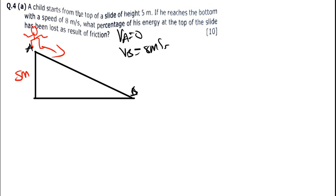If this was conservation of energy, the energy at point A would be the same as the energy at point B. But because there is friction — a non-conservative force — the energy at point B has to be less than the energy at point A.